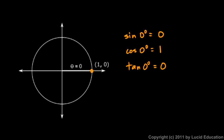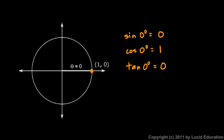If you put those values in the calculator they will show exactly that: the sine of 0 is 0, the cosine of 0 is 1, and the tangent of 0 — which is always the y over the x, or sine over cosine — is 0.